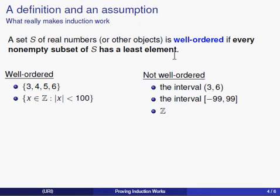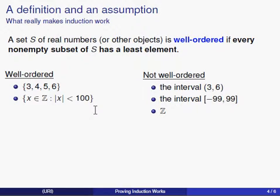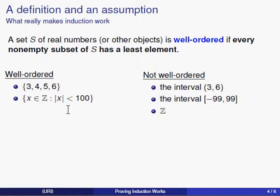Remember, the definition requires that every non-empty subset of S has a least element. So we also need to check subsets—for example, the subset {4, 6}—and ask whether it has a least element. It does: it's four. As another example, if we take a set defined by description rather than listing and take the subset of all even elements, there must still be a least element. In that case, negative 98 would be the least element of that particular subset.